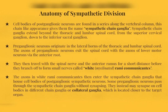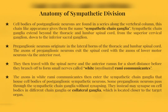Let's describe the anatomy of the sympathetic division. Postganglionic cell bodies are found in a series along the vertebral column, creating a chain-like appearance — giving them the name sympathetic chain ganglia. This ganglia extends beyond the thoracic and lumbar spinal cord. Preganglionic neurons originate in the lateral horns of the thoracic and lumbar spinal cord. Preganglionic axons exit the spinal cord through the anterior root, then travel along the spinal nerve and anterior ramus before branching off to form small nerves called white rami communicants — white meaning myelinated.